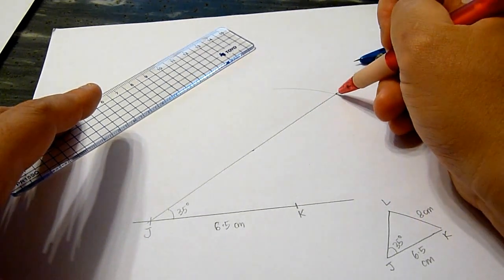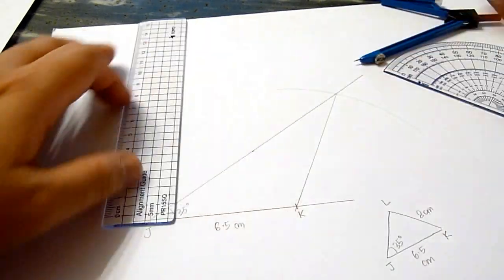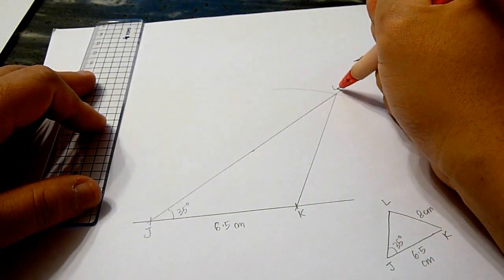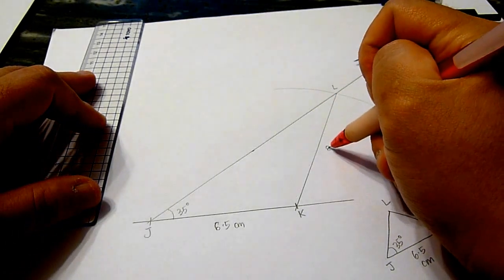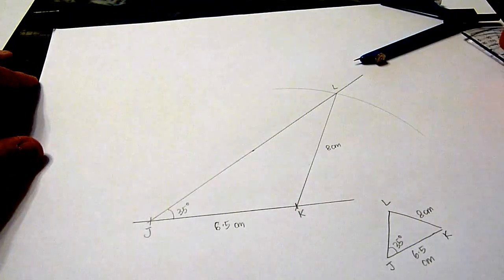And we join this intersection point to point K. Here, this is L, and the length LK will be 8 cm.